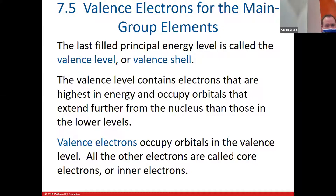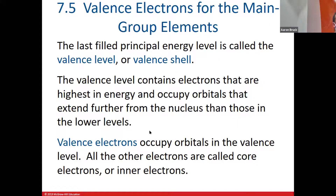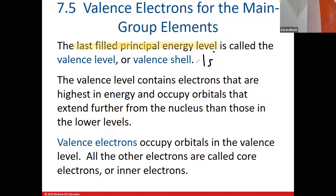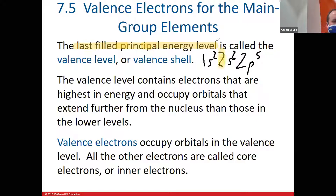Valence electrons concern the last filled energy level. If you think about electron configurations — for example, 1s² 2s² 2p⁵ as would be the case for fluorine — the electrons that exist in the second energy level would be considered valence electrons. Those are the electrons in the outermost energy level, furthest away from the nucleus.